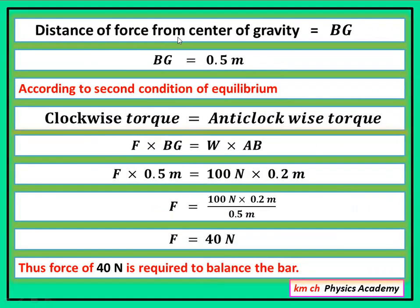Distance of force from center of gravity is BG and that is 0.5 meter. According to second condition of equilibrium, the second condition of equilibrium is clockwise torques is equal to anti-clockwise torques or sum of clockwise torques is equal to sum of anti-clockwise torques. Because in this situation only one torque is acting on each side so clockwise torques is equal to anti-clockwise torques this is also correct.